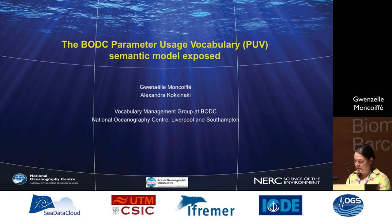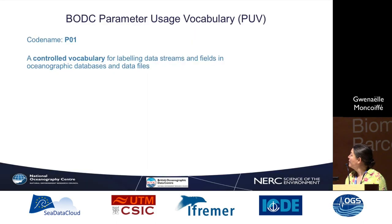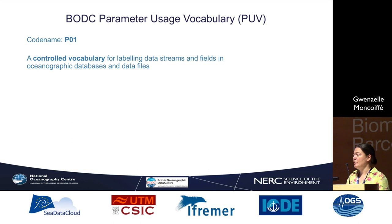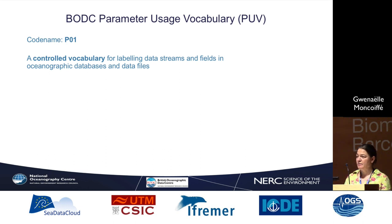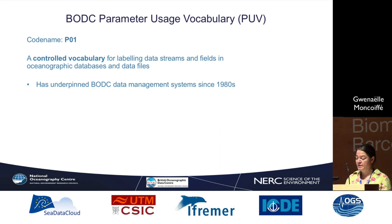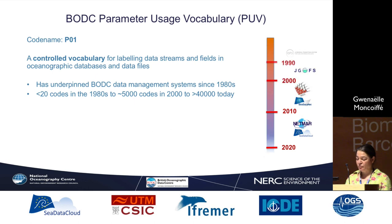I'm going to talk about the BODC parameter usage vocabulary and the parameter semantic models. The BODC parameter usage vocabulary is also known by its codename P01 — the P01 vocabulary. It is essentially a controlled vocabulary for labeling data streams and fields in oceanographic databases and data files. It has underpinned BODC data management systems since the 1980s, starting from less than 20 codes in the 80s to about 5,000 codes in 2000, and nowadays it is over 40,000 codes.